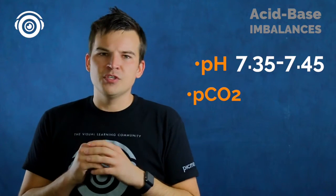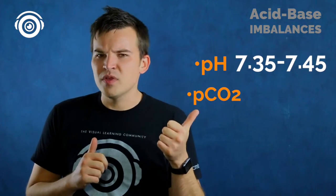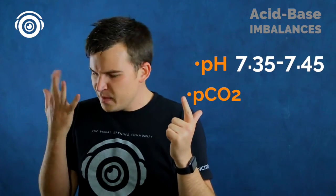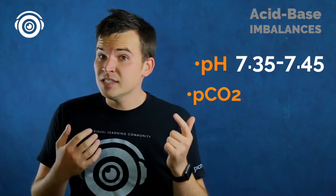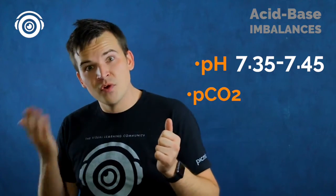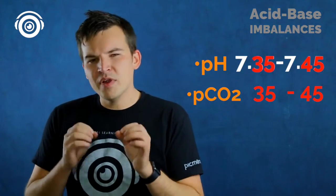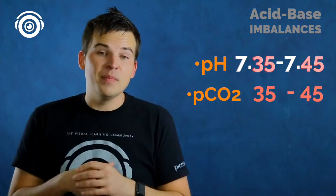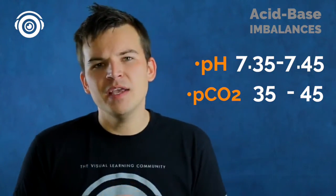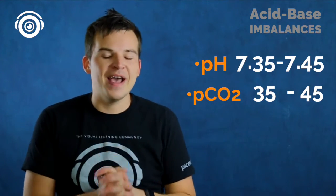What is a normal CO2? Well, pH is 7.35 to 7.45, and CO2 is 35 to 45 — pretty much the same numbers, so remembering 35 to 45 is what you need. CO2 is an acid. How do we remove and regulate CO2 in our body? We blow it off — that's blowing off some acid.